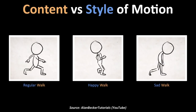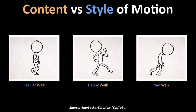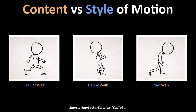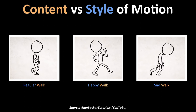At first it wasn't immediately clear to me what content vs. style meant in the context of motion, but the difference is pretty simple. Consider these 3 doodles, all of them showing the animation of a guy walking. The guy in the middle is clearly looking happier than the other two, and the last guy is looking pretty depressed. The happy and sad part of the motion is what we call the style of that motion, while the walking animation is defined as the content.